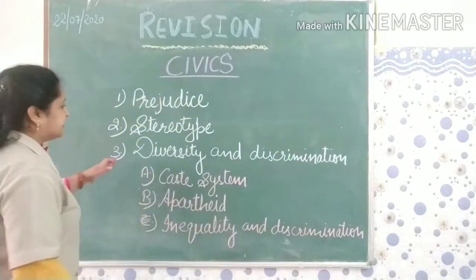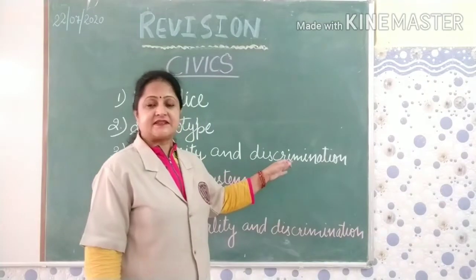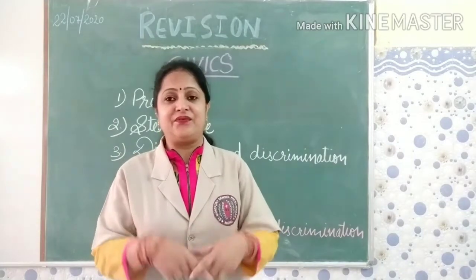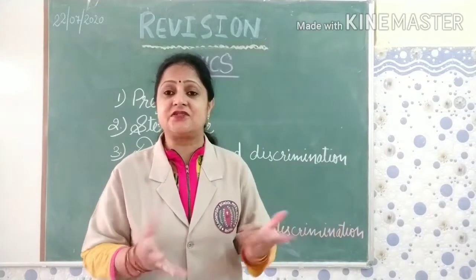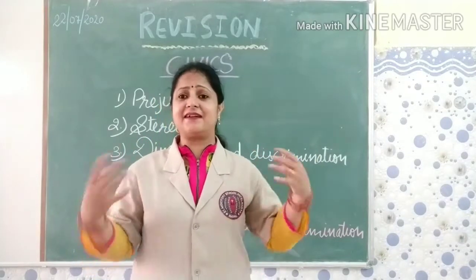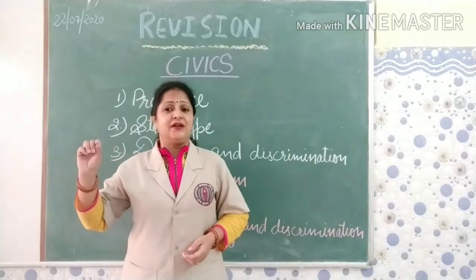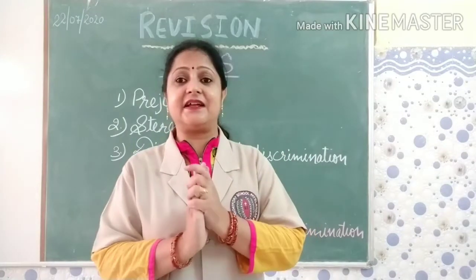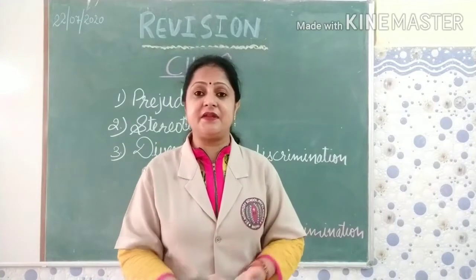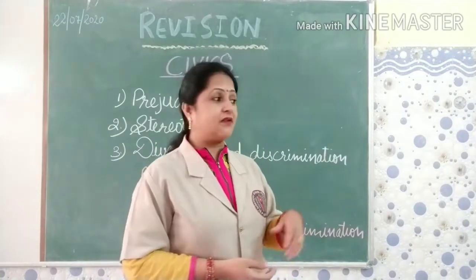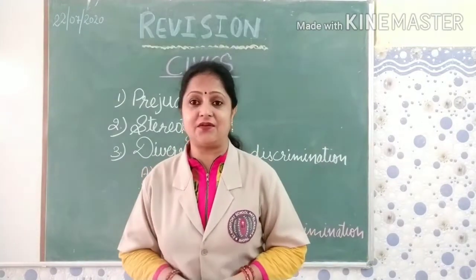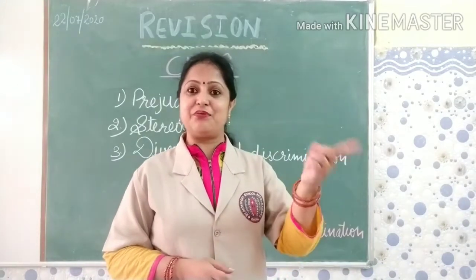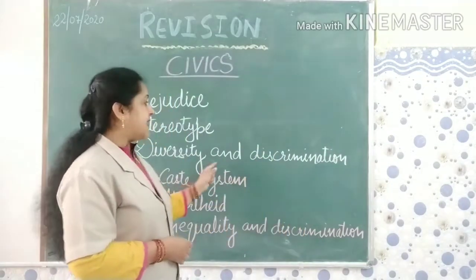Next is diversity and discrimination. In India there are so many people on the basis of religion, caste, and color — this is called diversity. People living in different states have their own language and culture, and all this comes under diversity. But when we start discriminating people on the basis of this diversity — their caste, color, or state — this comes under diversity and discrimination.